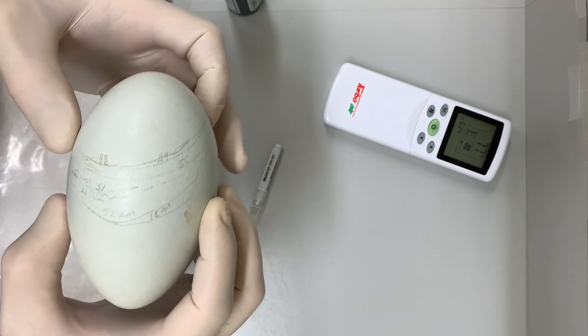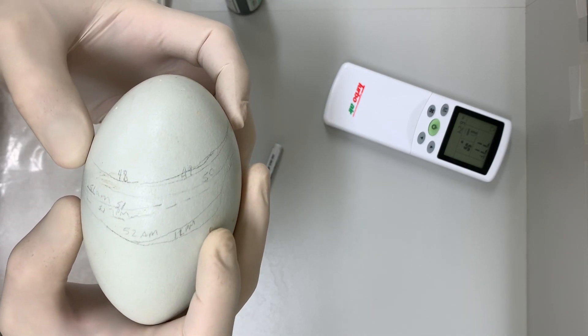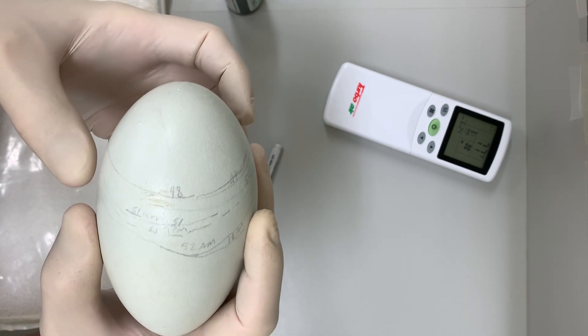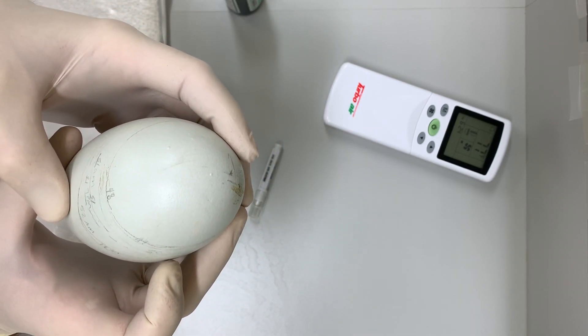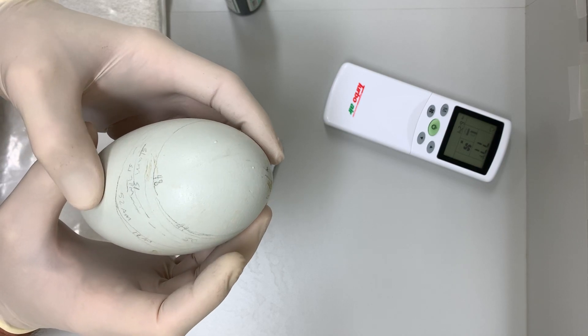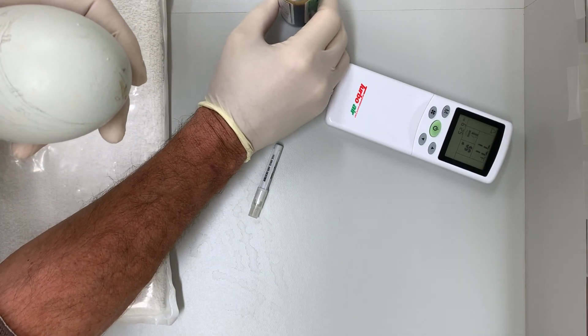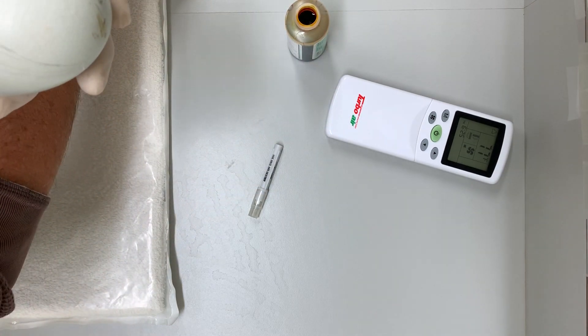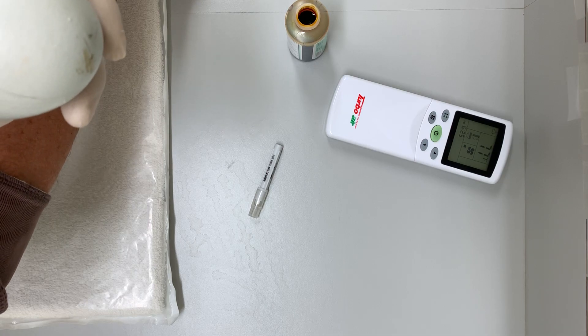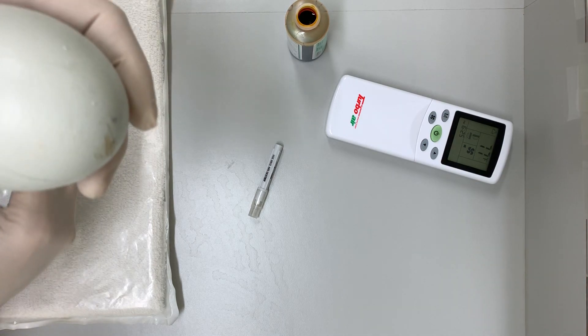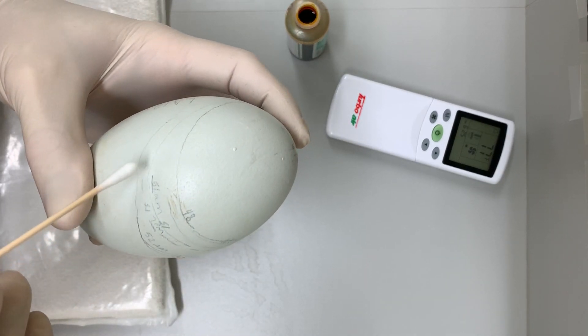Okay, this thing is 52 days old. Normally they internally pip on day 53, but this one's a little ahead of schedule. It's about seven o'clock and I don't want to leave it without knowing that it can breathe if it needed to. So I'm gonna put an air hole in the shell.